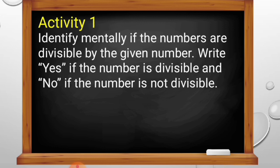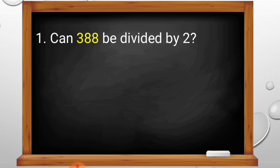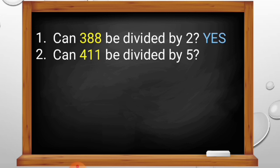Now let us do Activity 1 of your learning activity sheet. Identify mentally if the numbers are divisible by the given number. Write yes if the number is divisible and no if it is not. Number 1: Can 388 be divided by 2? The last digit of 388 is 8, therefore 388 can be divided by 2 — the answer is yes. Number 2: Can 411 be divided by 5? Recall the divisibility rule for 5: all numbers ending in 0 or 5 are divisible by 5. The last digit of 411 is 1, therefore 411 cannot be divided by 5.